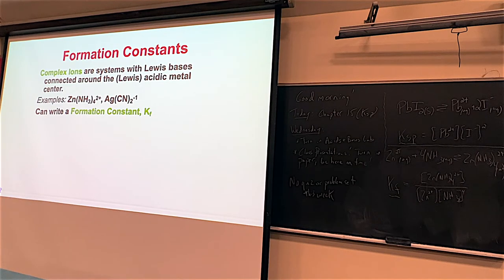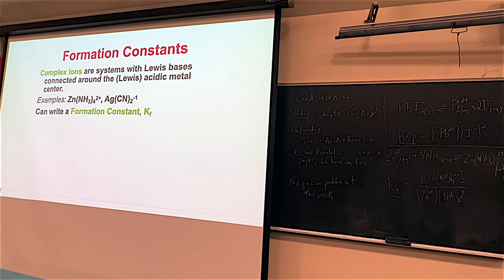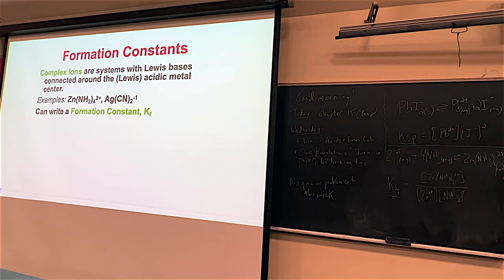These complex ions are aqueous. If you have a complex ion and want to write a formation constant expression for it, the key difference is that the complex ion will be the product. In all KSPs, the reactant was always the solid, and the solid broke up into its ions. But with a complex ion — a formation constant, KF — the complex ion is the product and the ions that go into it are the reactants.